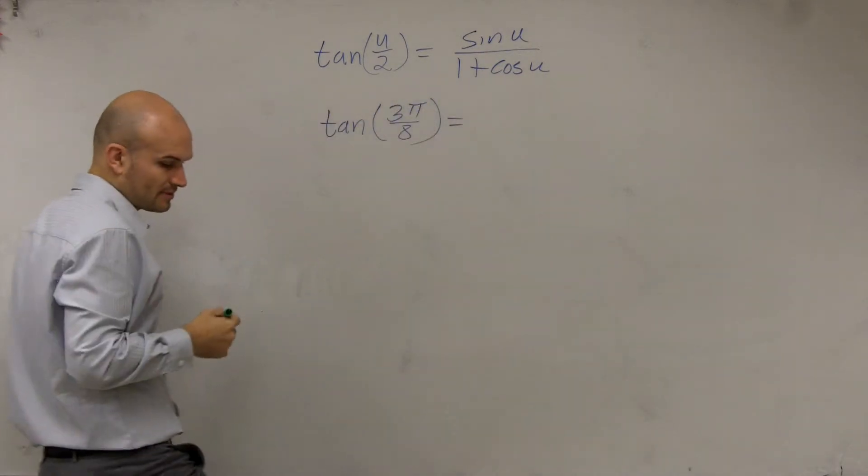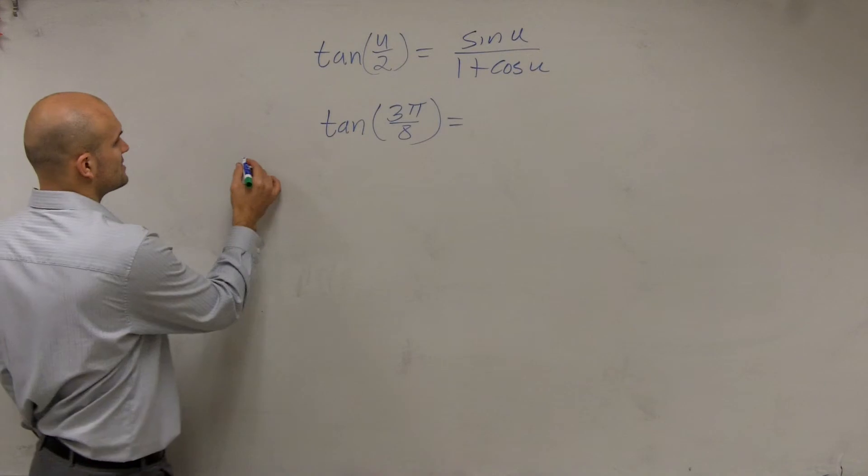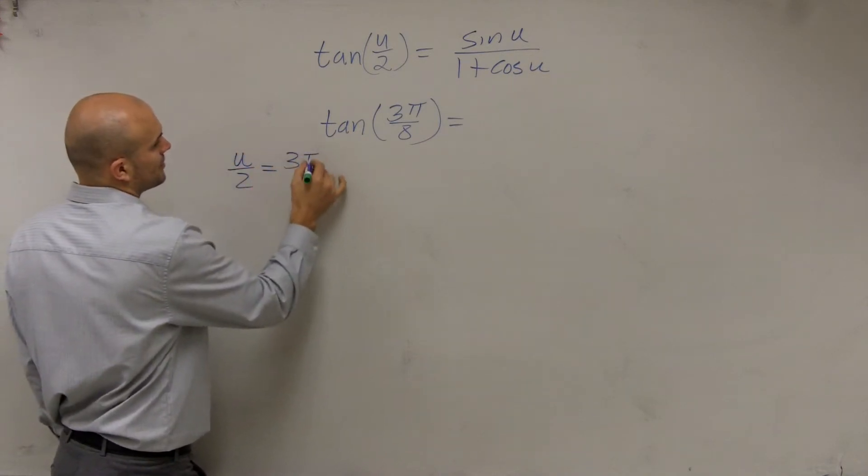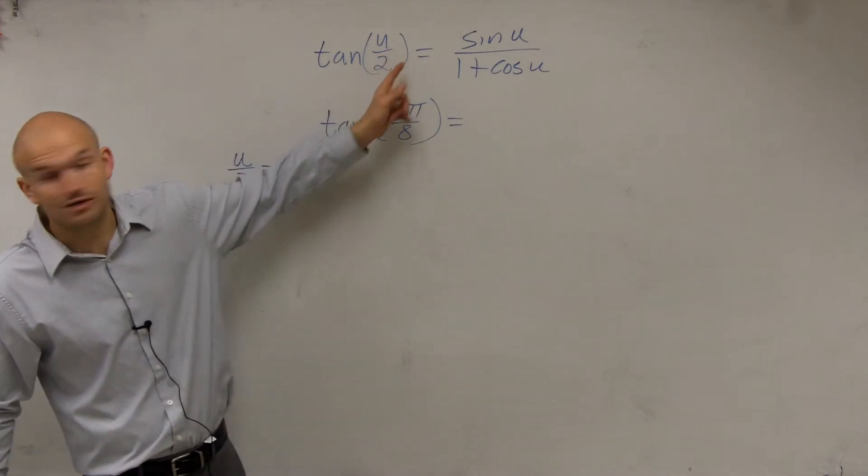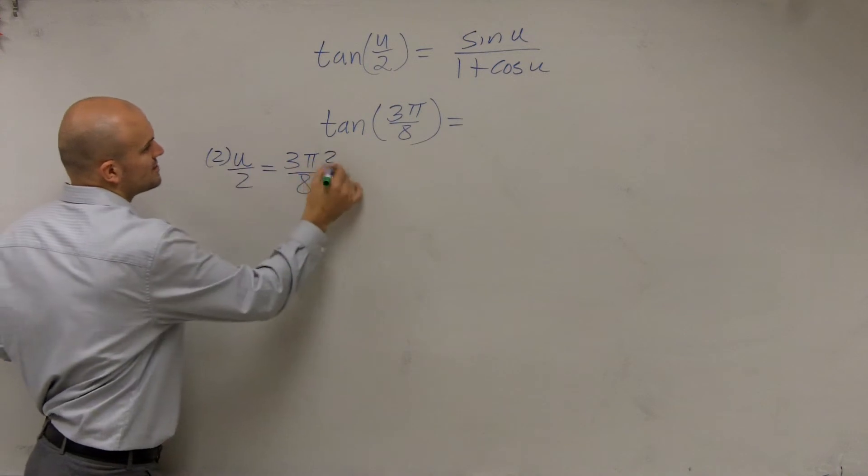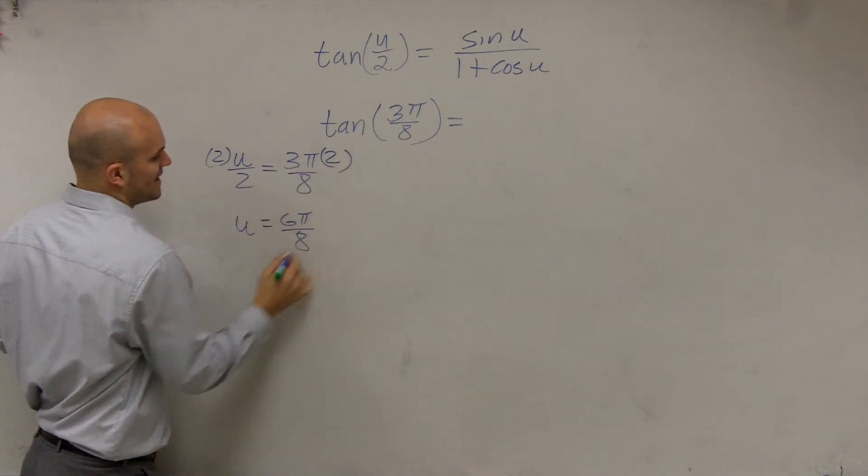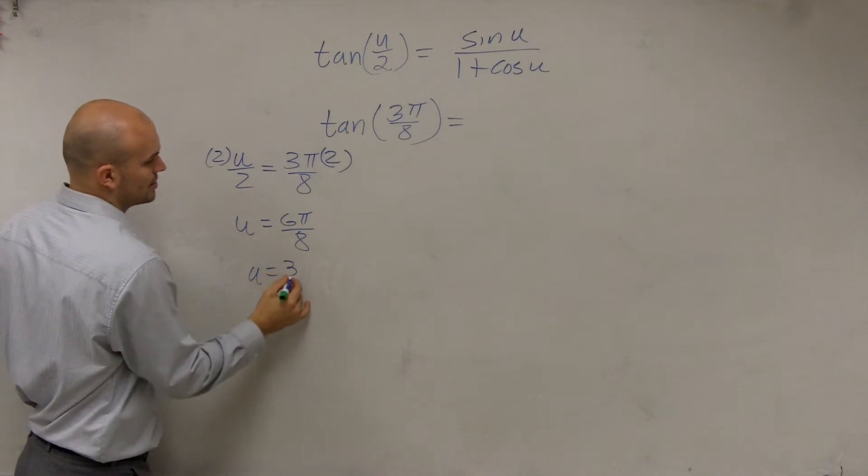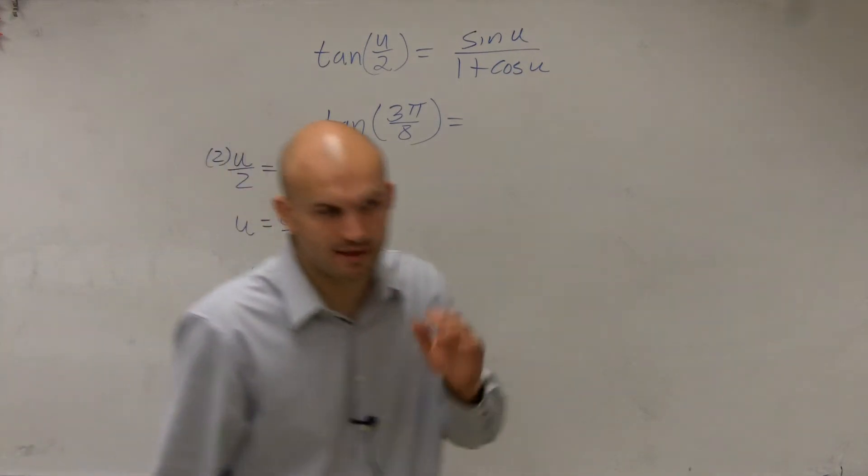So again, we go back to our rule and we say, don't tangle yourself. We'll say u divided by 2 equals 3 pi over 8. We're saying u divided by 2 is equivalent to 3 pi over 8. So we multiply by 2 on both sides. u equals 6 pi over 8, therefore u equals 3 pi over 4 by reducing our fraction.